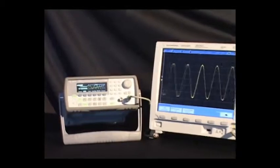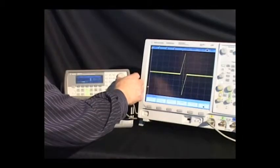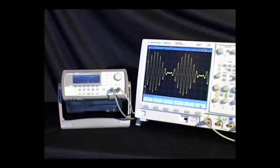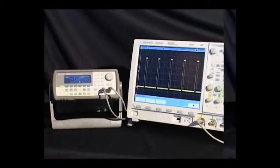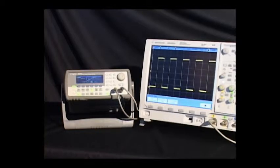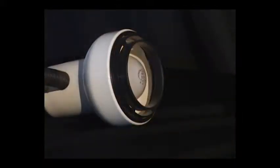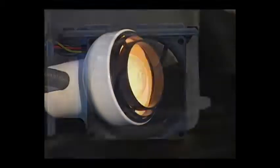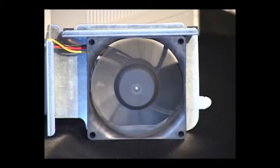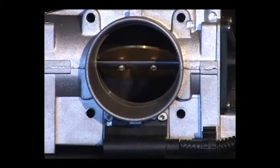The 33220A includes internal sweep, burst, and various types of modulation. Pulse width modulation is used in many applications for controlling electrical and mechanical devices, ranging from controlling lights, to adjusting motor speed, to opening valves.